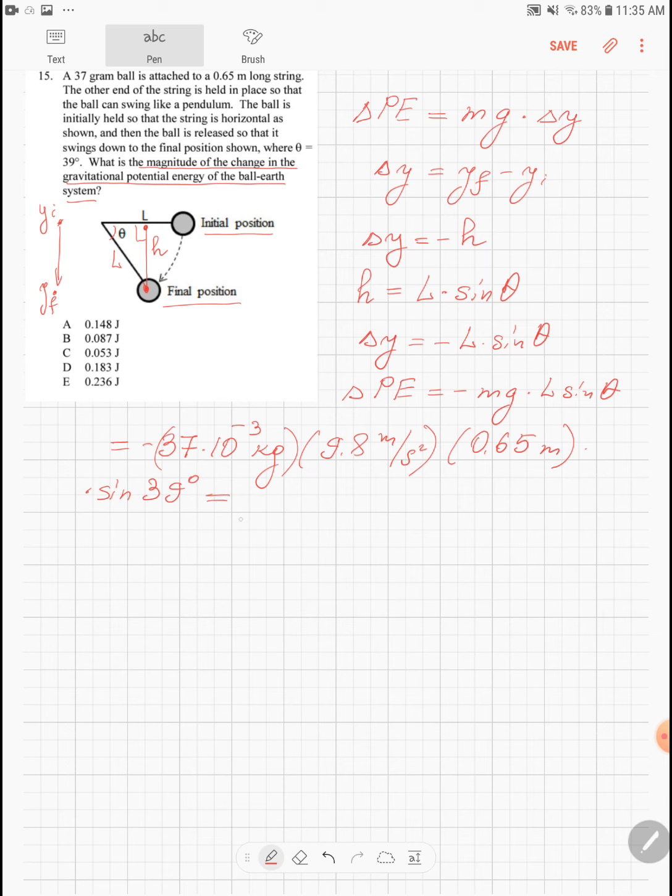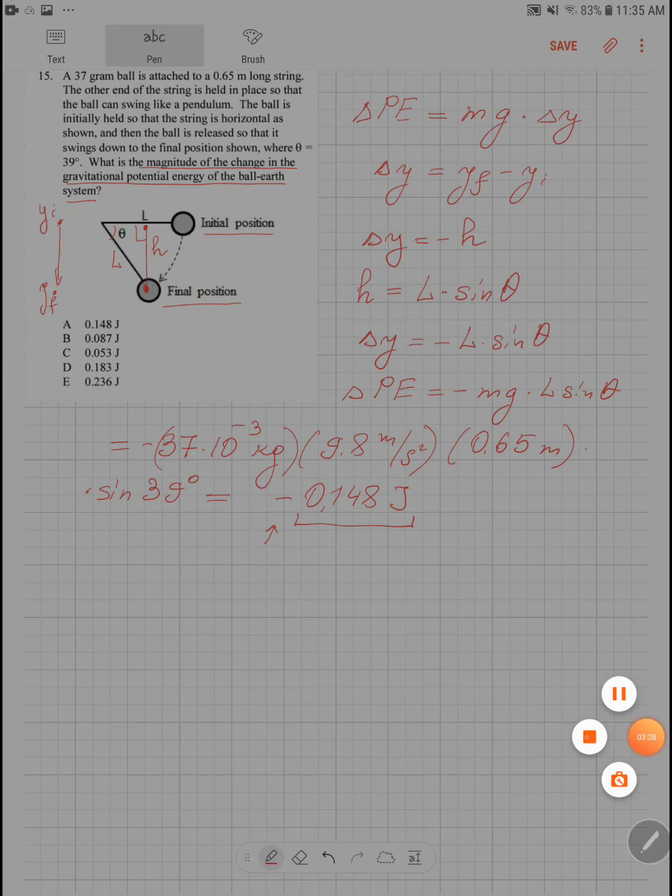Substituting all the numbers and using my calculator I obtain negative 0.148 joules. What we need to find is actually only the magnitude of this change. So we can just discard the sign and this will be our final answer. Thank you.